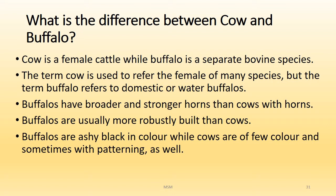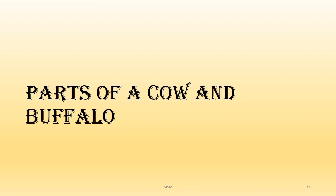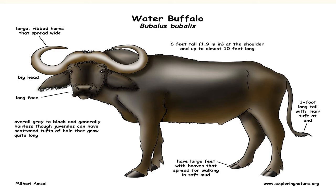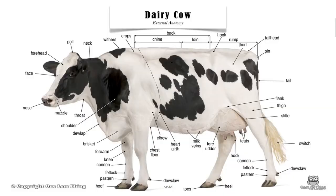The color is different. Buffaloes have broader and stronger horns which may be curved. Buffaloes are more robust than cows. The major difference you will see on site is that buffaloes are black in color, while cows can range in color from white, sometimes patterned, to grey to brown. A water buffalo is roughly 6 feet tall at the shoulder and can be almost 10 feet long, with a very long tail and hooves that are spread for walking in soft mud. They like to wallow in water and have quite a big head with large horns. The female dairy cow has a large udder with 4 nipples, which is very prominent compared to beef cattle.